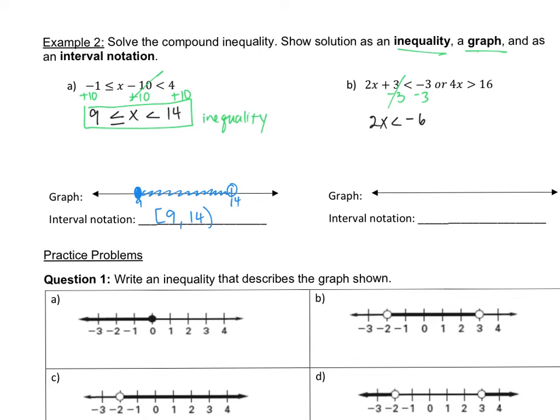Need to subtract 3, and so that gives me 2x and negative 3 minus 3 is minus 6. Now I have to divide by 2. This is dividing by positive 2, so I don't need to flip the sign. Negative 6 divided by 2 is still a negative 3. So now I have this as my first inequality.